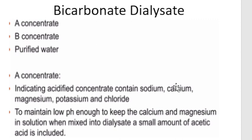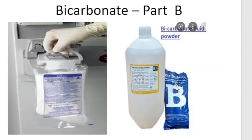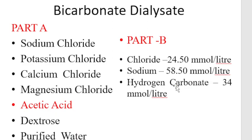Now we use bicarbonate dialysate. As you can see in the PPT, bicarbonate dialysate uses Part A — acid concentrate — Part B — bicarbonate — and purified RO water. Part A contains all electrolytes equal to blood plasma, except potassium and sometimes glucose. Part B contains bicarbonate, which acts as a buffer for acid-base balance. Part A components include: sodium chloride, potassium chloride, calcium, magnesium, acetic acid, dextrose, and purified water.